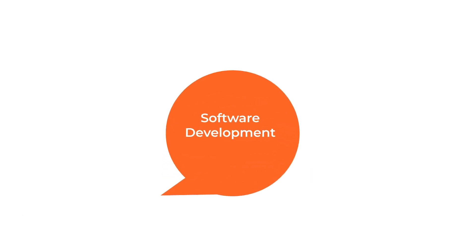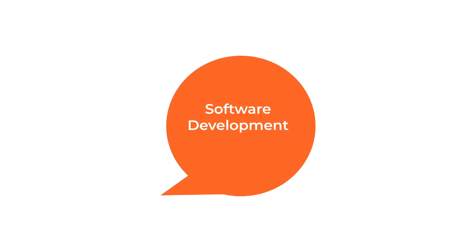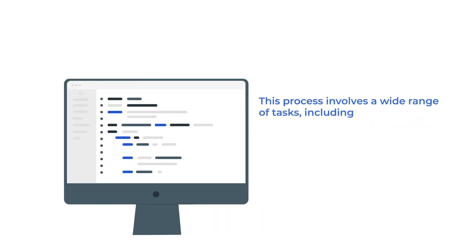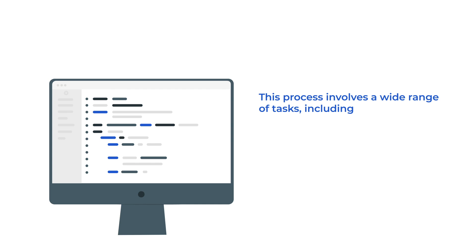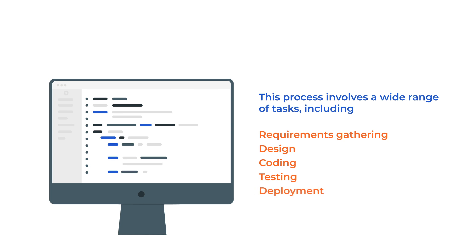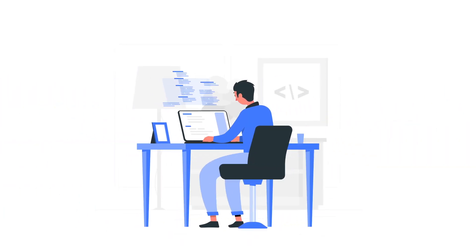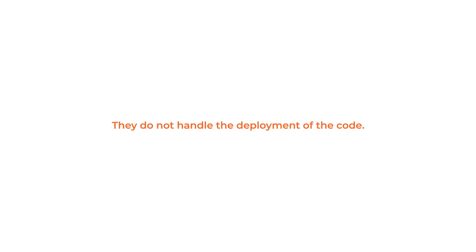Next up is software development. Software development is the process of designing, creating, and maintaining software applications. This process involves a wide range of tasks, including requirements gathering, design, coding, testing, and deployment. Software developers are responsible for writing and maintaining the code that makes up these applications. They do not handle the deployment of the code.